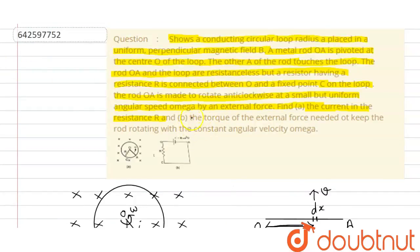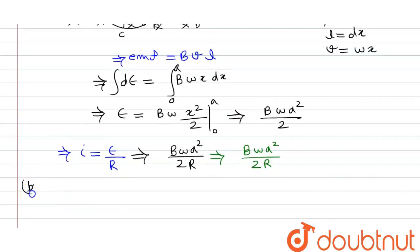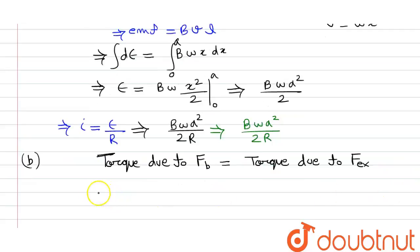For part B, we need to find the torque of the external force needed to keep the rod rotating with constant angular velocity omega. Since current is flowing in the rod, a magnetic force acts on it. To maintain constant angular velocity, we must balance the torque due to the magnetic force with the torque due to the external force.